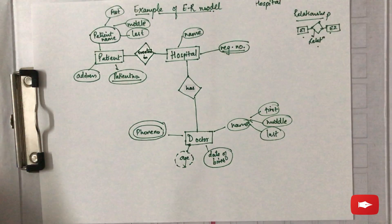Lastly, the diamond boxes representing relationships between entities need to be labeled. In this case, since the patient is treated in the hospital, the first diamond box is filled with 'treated in.' Since the hospital has many doctors, the second diamond box is filled with the word 'has.'